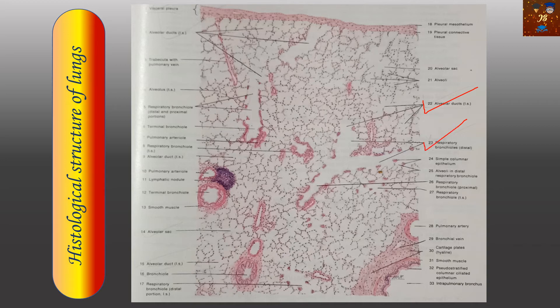Next, pulmonary bronchioles — these are the pulmonary bronchioles, and they are very closely related, the alveolar ducts and the pulmonary bronchioles. Then we have pulmonary artery, then we have bronchial vein, and bronchioles — you can see, these are the bronchioles. Some smooth muscles are also here. So these are the identifying characters of the lungs.